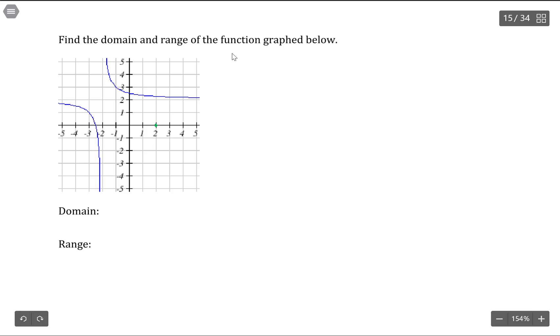For instance, if I pick 2, 2 has an associated y value, it's right there. If I pick negative 4, negative 4 has an associated y value, it's right there.